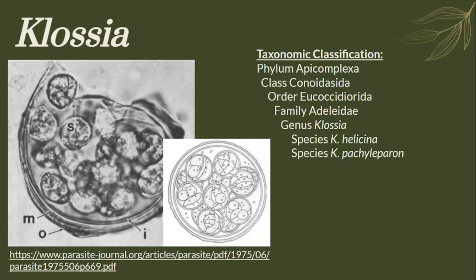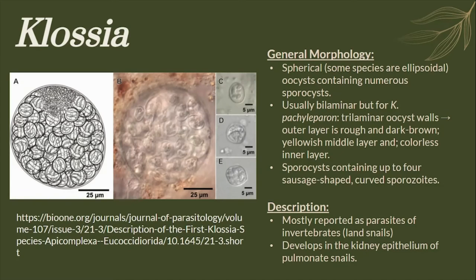Taxonomic classification for the genus Glosia. Species from the genus Glosia are mostly reported as parasites of invertebrates, more particularly of land snails, and they develop in the kidney epithelium of these snails. They have spherical oocysts containing numerous sporocysts. Some species manifest ellipsoidal oocysts. Their oocysts are usually bilaminar, but for Glosia pachyleperon they have trilaminar oocyst walls, with an outer layer being rough and dark brown, a yellowish middle layer, and a colorless inner layer. They also have sporocysts containing up to four sausage-shaped and curved sporozoites.